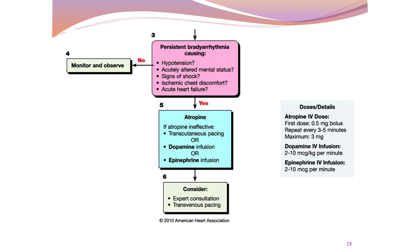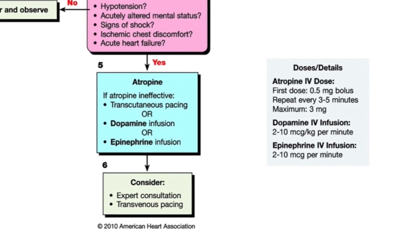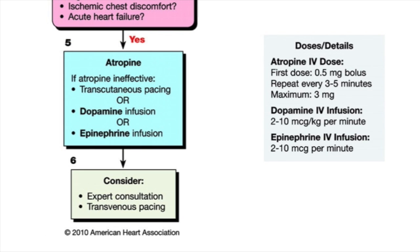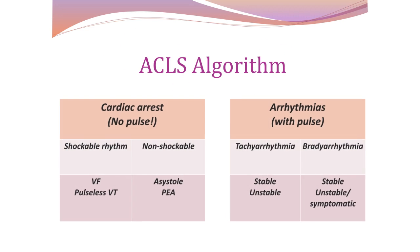For symptomatic bradycardia, the first-line treatment is atropine: IV atropine 0.5 mg bolus, repeated every three to five minutes to a maximum of 3 mg. If atropine does not work, consider dopamine infusion, adrenaline infusion, or transcutaneous pacing. Dopamine infusion is given at 2 to 10 micrograms per kilogram per minute, while adrenaline is given at 2 to 10 micrograms per minute. Transcutaneous pacing is covered in a separate lecture on ACLS electrical therapy.